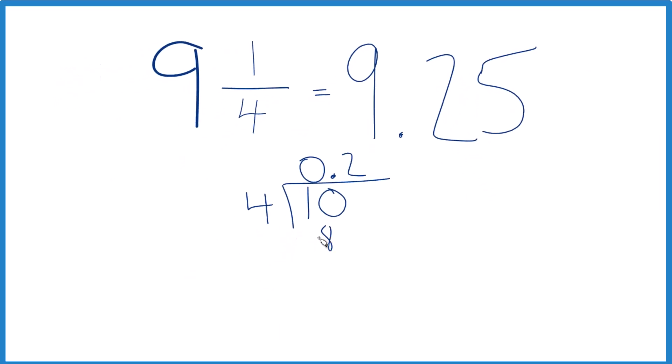2 times 4 is 8. Subtract and we get 2. 4 doesn't go into 2, but we could call it 20. Move over 1. 5 times 4, that's 20. Subtract, no remainder. So 1/4 equals the decimal 0.25.